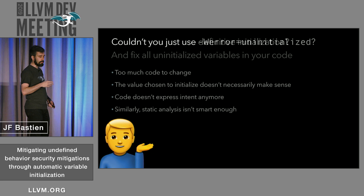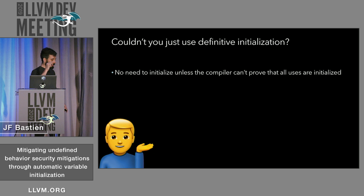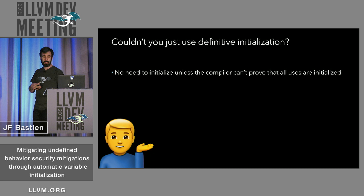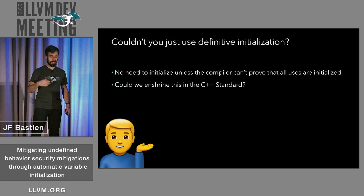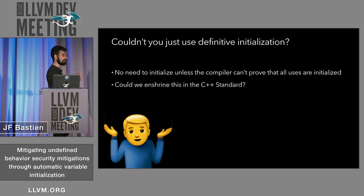Another suggestion is definitive initialization, which a few programming languages have. It says: if the compiler can't prove you've initialized a value, you must initialize it. Could we do that in C++? It's not what C++ does today. It's an ongoing conversation in the committee — we might do it, but it's not there today, and I have bugs today I'm trying to prevent.